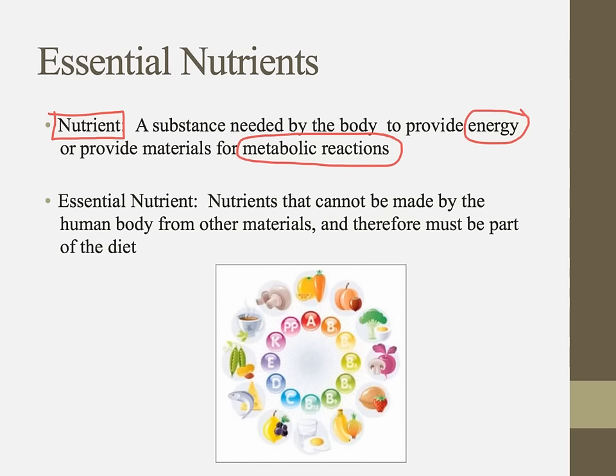Essential nutrients are a little bit different. These are nutrients that we can't make in the human body — we can't manufacture them from other materials, so we have to eat them. A lot of things we can convert from what we already have, but essential nutrients we can't manufacture; we have to eat them.